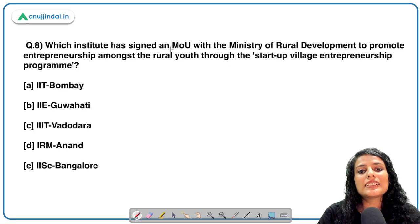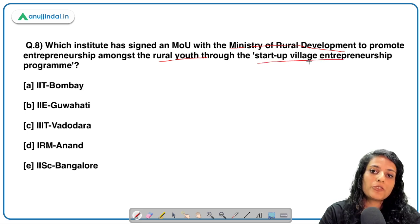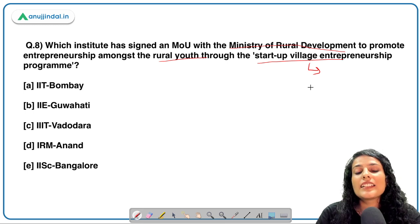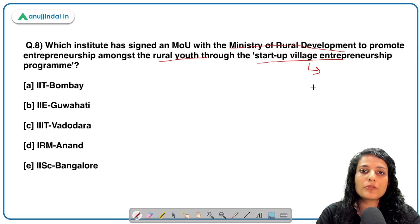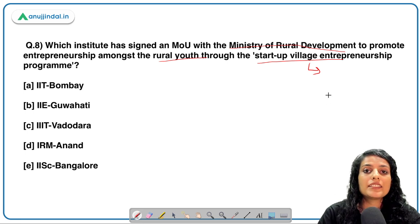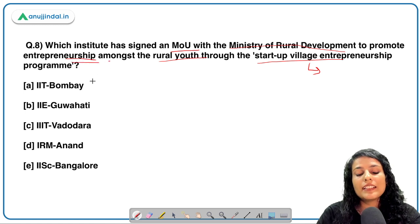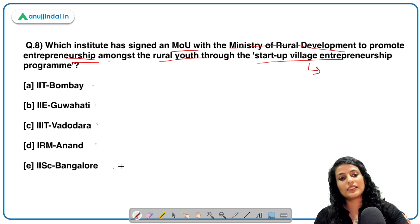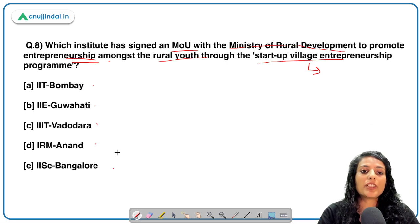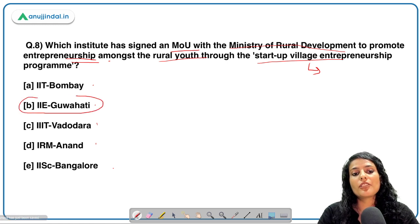Next question: which institute has signed an MOU with the Ministry of Rural Development to promote entrepreneurship among rural youth through the SVEP — Startup Village Entrepreneurship Program? It comes under Deen Dayal Upadhyay Yojana's National Rural Livelihood Mission, aiming at generating sustainable livelihoods in the non-agricultural sector and reducing rural poverty. The correct answer is the Indian Institute of Entrepreneurship, situated in Guwahati, which has signed an MOU with MoRD.